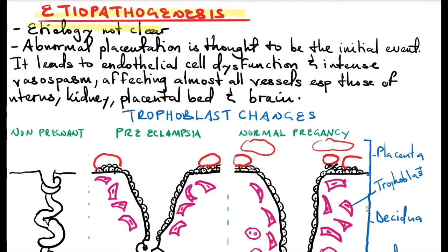For the etiology, it is not clear, but it is thought that abnormal placentation is the initial event that leads to endothelial cell dysfunction and intense vasospasm, affecting almost all the blood vessels, especially those of the uterus, the kidney, the placenta bed, and the brain.